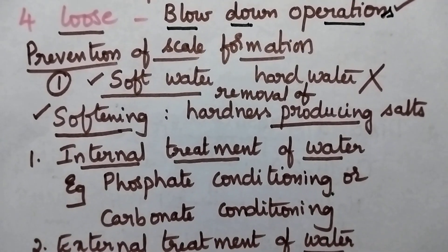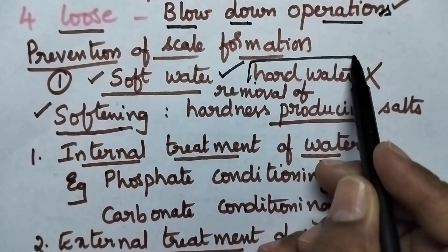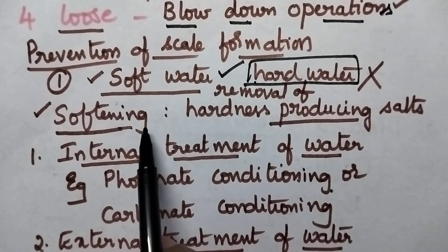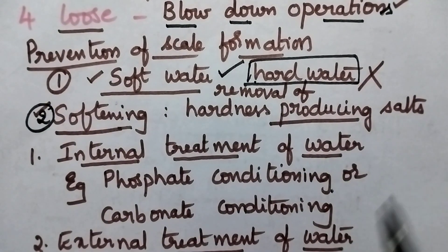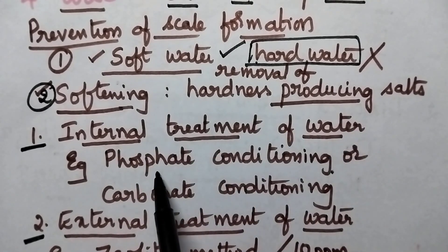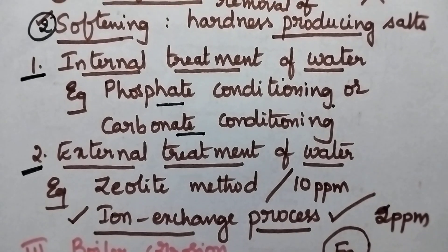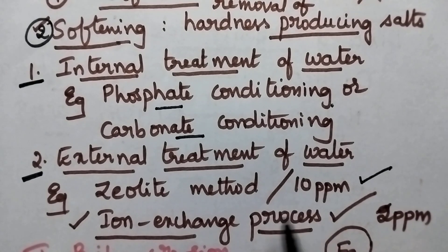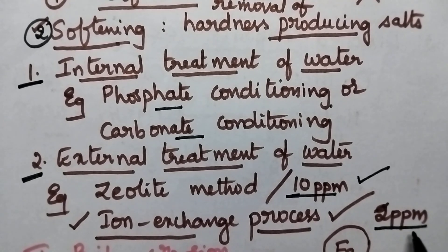Scale formation can be prevented by using soft water instead of hard water, or by using softening methods for the removal of hardness. This can be done by internal treatment of water — such as phosphate conditioning or carbonate conditioning — or external treatment of water, such as the zeolite method or ion exchange process. The zeolite method removes hardness up to 10 ppm, while the ion exchange process can reduce hardness up to 2 ppm.